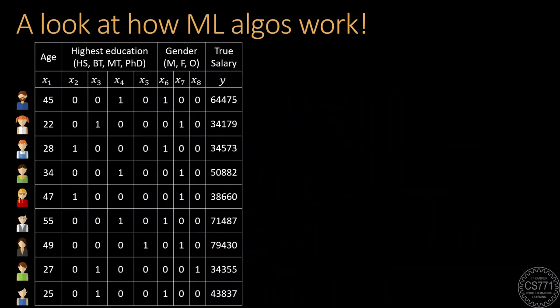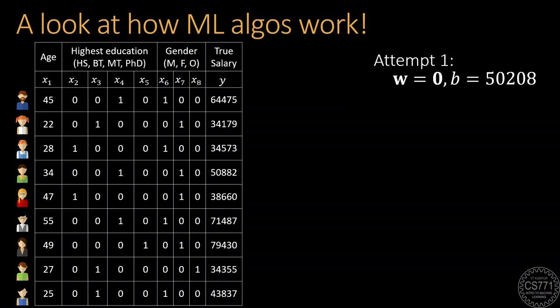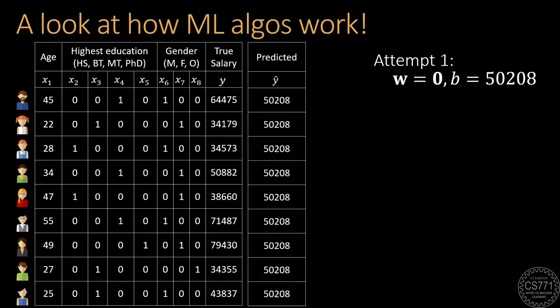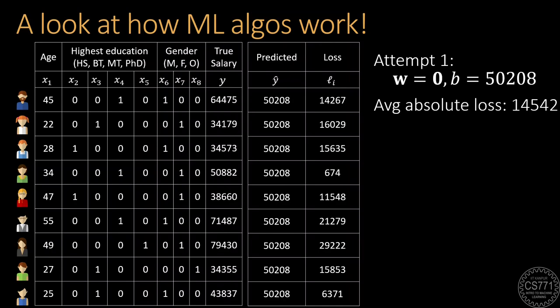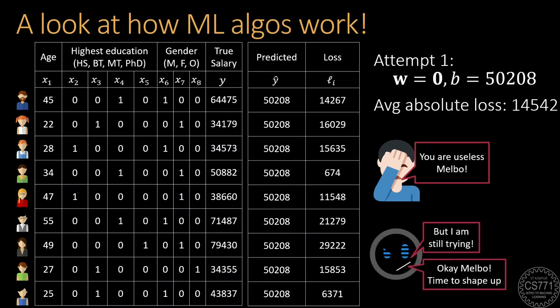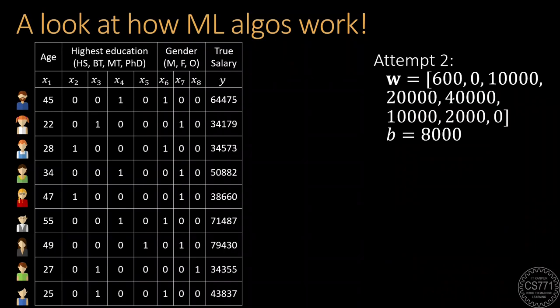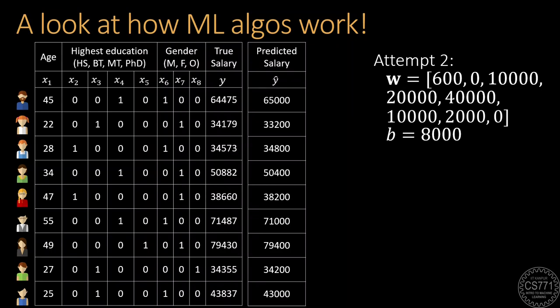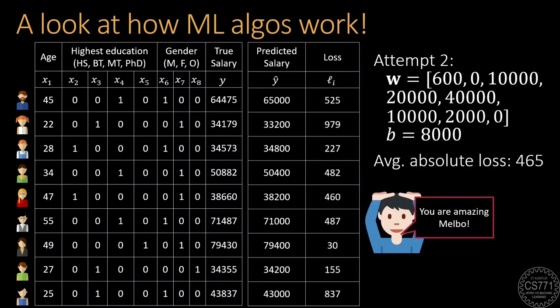So the way several machine learning algorithms work is by starting with an initial guess for the parameters. For example in this case Melbo thought it would be good to just take the average salary of the users in the training set and use that as the base salary and assume that there is no influence of age, education or gender. This would cause the predictions of the model to be exactly the same on every training data user and as expected the loss value would be quite large. This is not a really good model. However the idea really is to take this loss value and use it as feedback to keep improving the model and hopefully once we have churned the machine learning algorithm enough we might land up with parameter values that are able to give much better predictions on the data and incur a very low value of loss at which point the machine learning algorithm would stop and output these as the learned parameter values for this model.